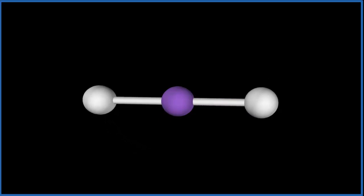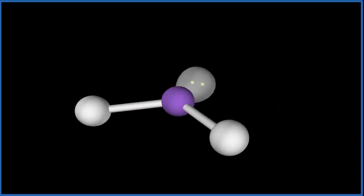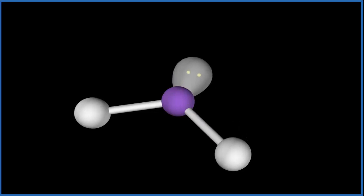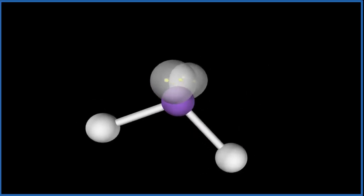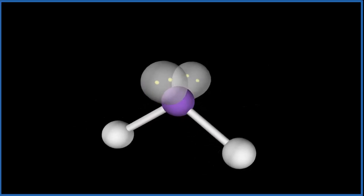Then we need to add those two lone pairs. Remember that lone pairs also occupy space and they'll push the atoms down. Here, the one lone pair, we push these two hydrogens down on the molecule. We add our second lone pair, and now we end up with this shape for the water molecule with this bond angle here.